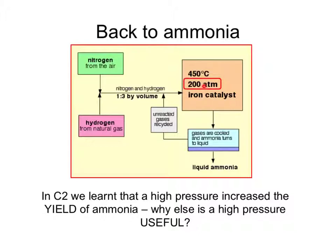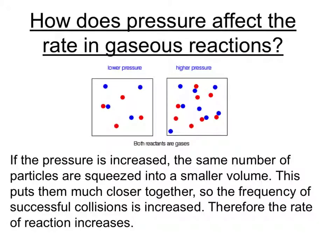But there's also another reason why a high pressure is a good idea in this reaction, because the high pressure increases the rate of the reaction. The particles of hydrogen and nitrogen need to be able to collide in order to react. And if we increase the pressure, this is like increasing the concentration of a solution — it forces the particles much closer together. And if the particles are closer together, then the frequency of collisions is going to be greater, and therefore the rate of reaction is going to be faster.